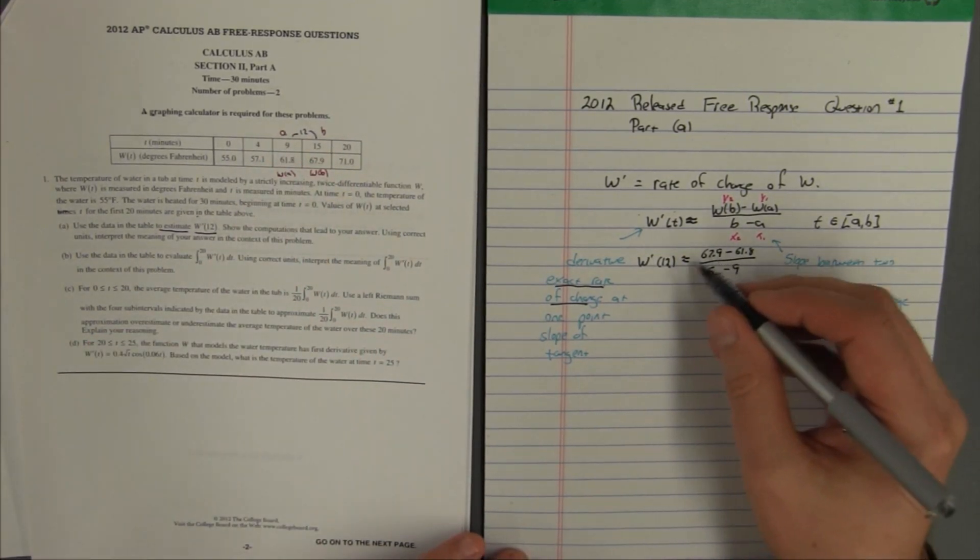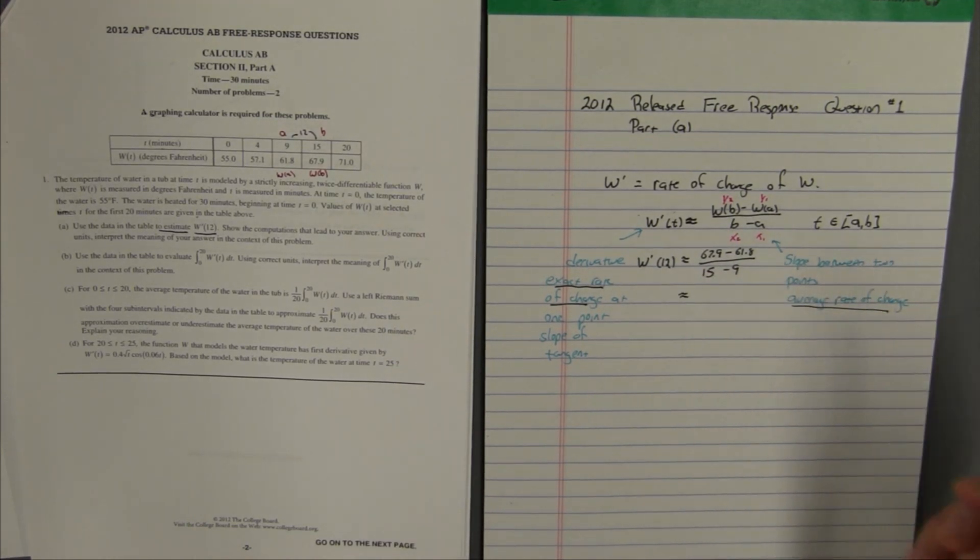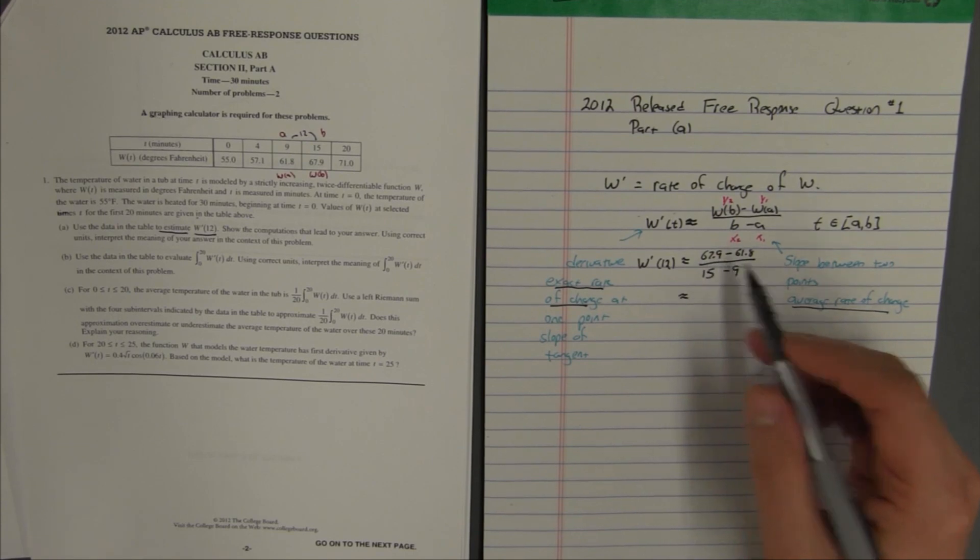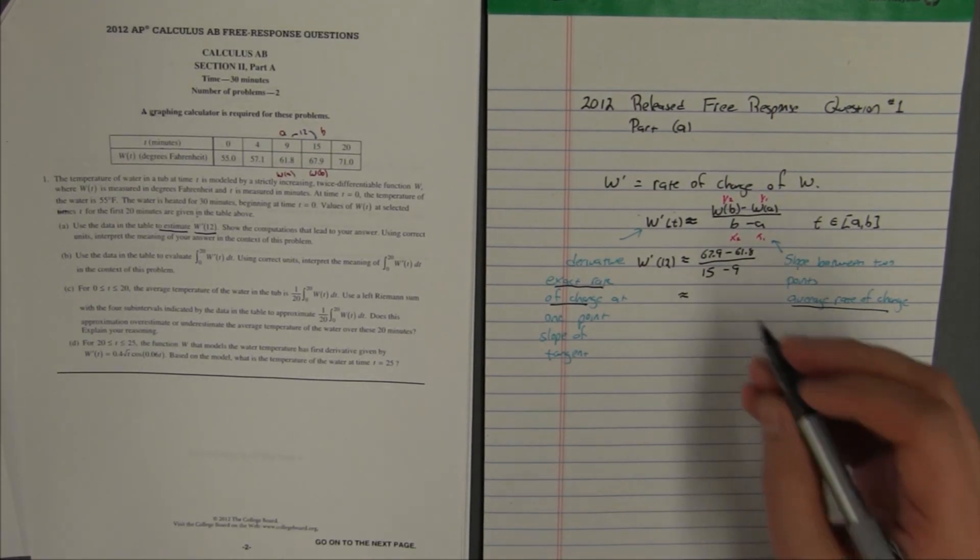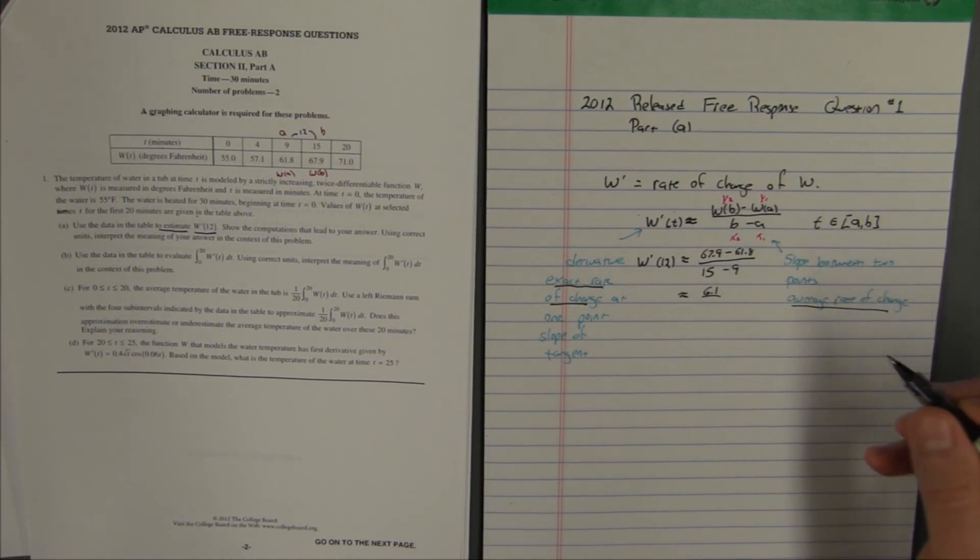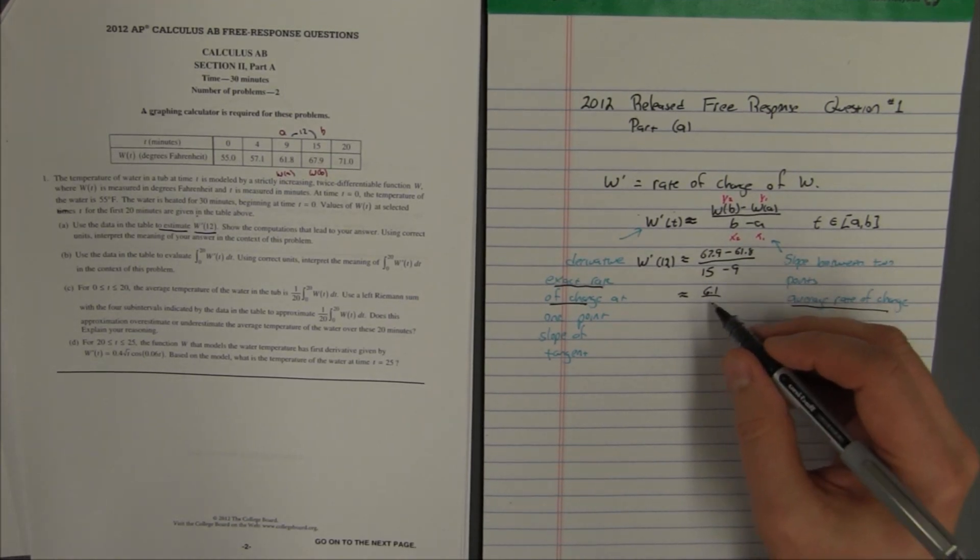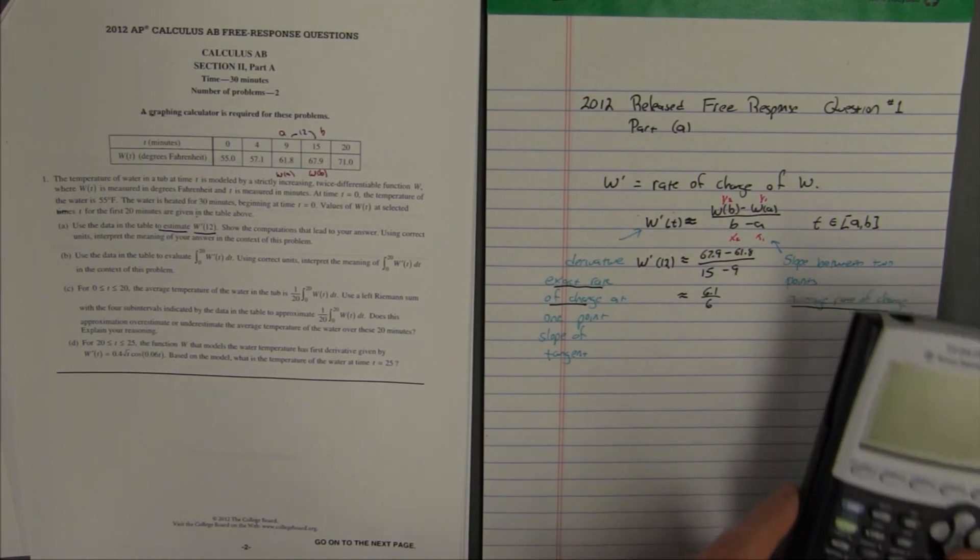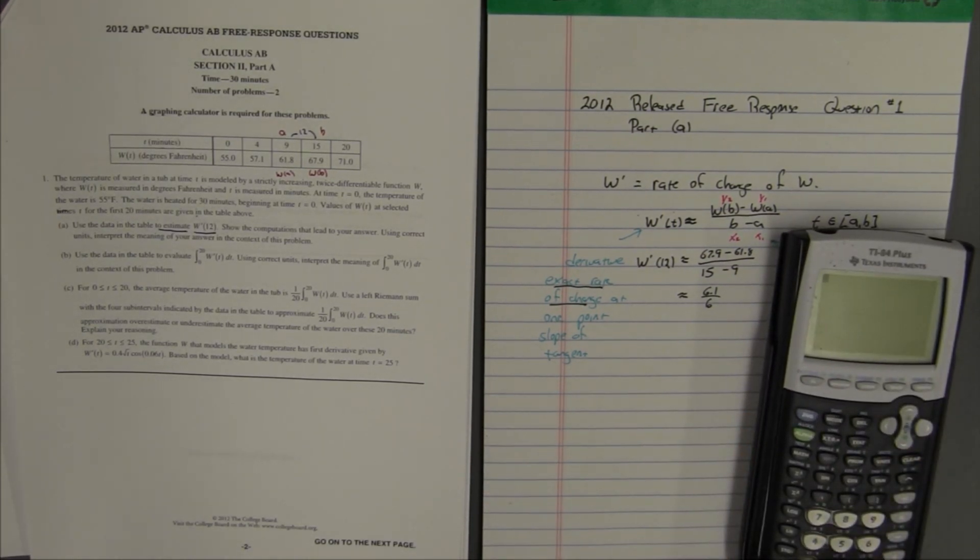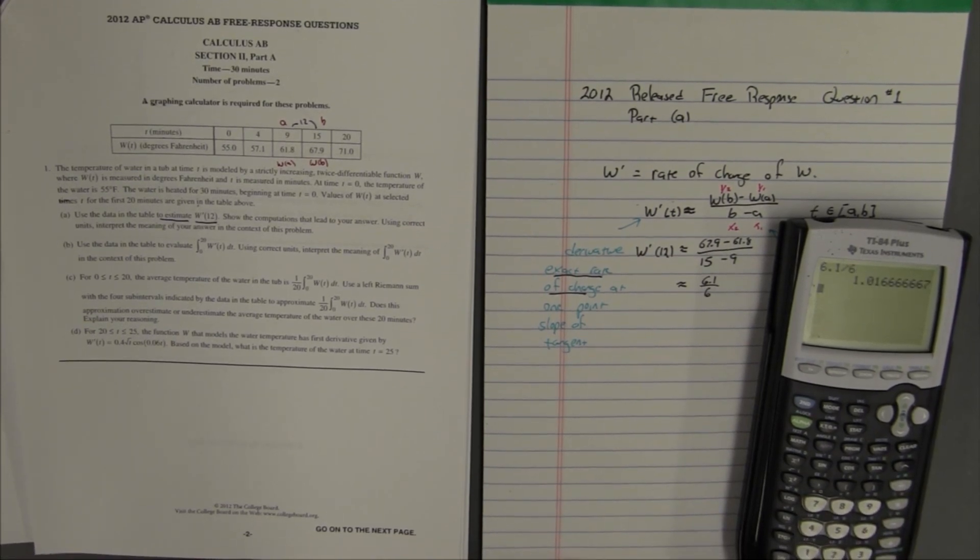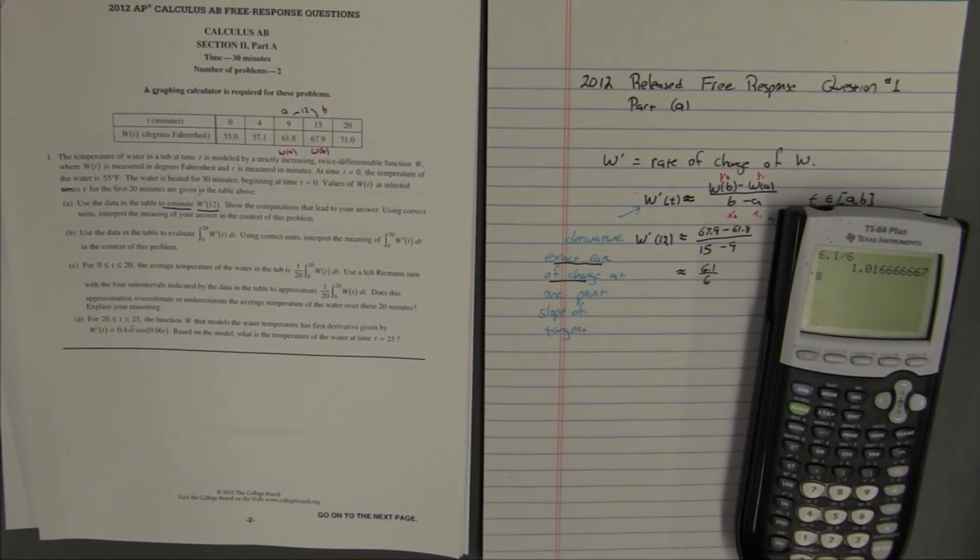And now we just have to work out what this is. And now this is a calculator active question. So if you like, you can use your calculator to do 67.9 minus 61.8, but hopefully you don't need that in order to conclude that that's 6.1 divided by 15 minus 9, which is probably about 6. But then when we do 6.1 divided by 6, maybe we could be clever and figure that out. But since we're stressed and taking the exam, let's just get our calculator and divide it. 6.1 divided by 6 is 1.01666 and the 6 is apparently repeating.